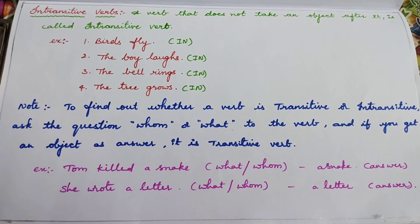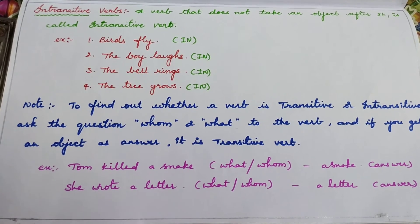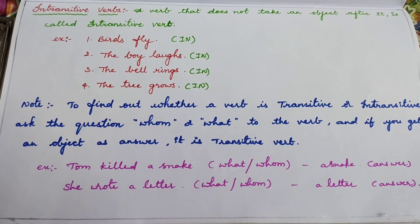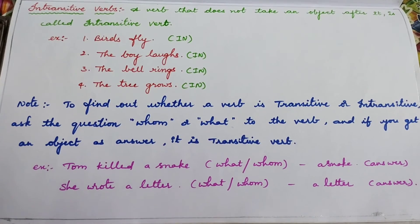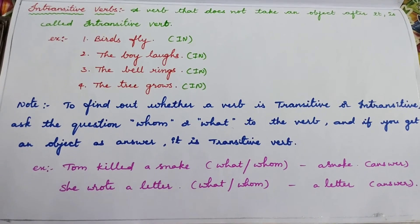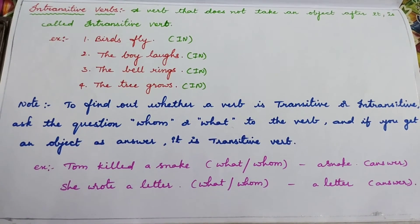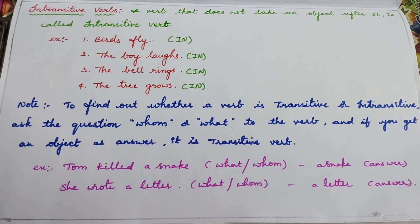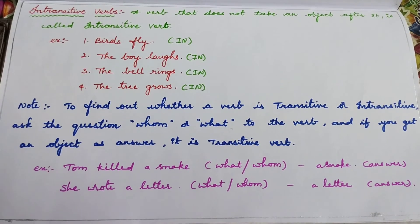Only whom or what. Not the remaining questions. Tom killed a snake. What did Tom kill? A snake. So answer you got for what. She wrote a letter. What did she write? A letter. Such verbs like killed and wrote are transitive verbs.